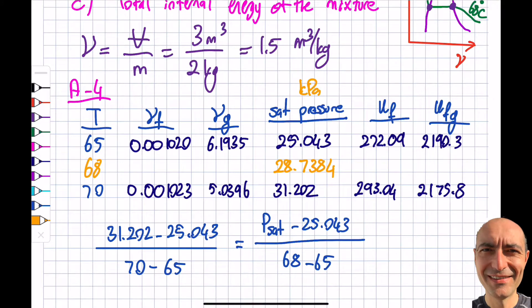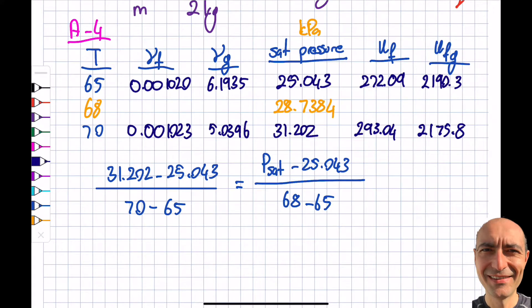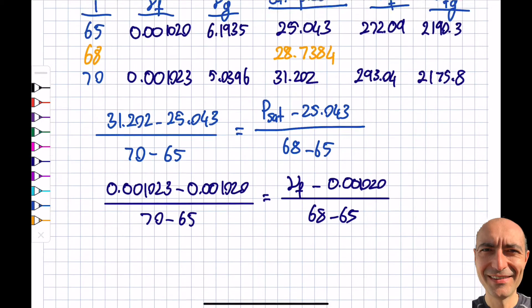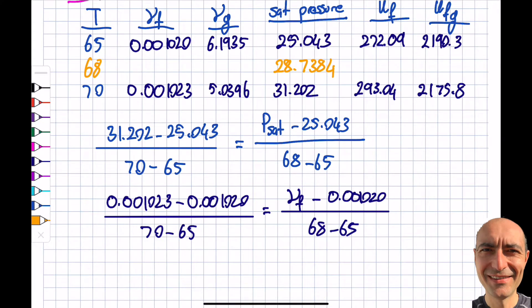And I did the same interpolation. Let me show just one of them, maybe. So let's say this is 0.001023 minus 0.001020 divided by 70 minus 65 will be equal to the specific volume of the saturated liquid at 68, minus 0.001020 divided by 70 minus 65. Again, a hint to you, so this and this, this and this is the same. So I only change these two and these two. There's a hint to you. So if I do it, if I punch into my calculator, I will get myself 0.0010218.